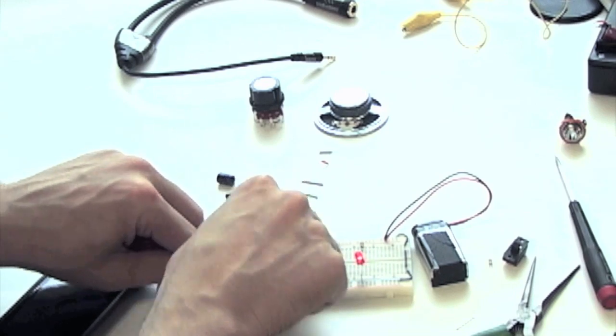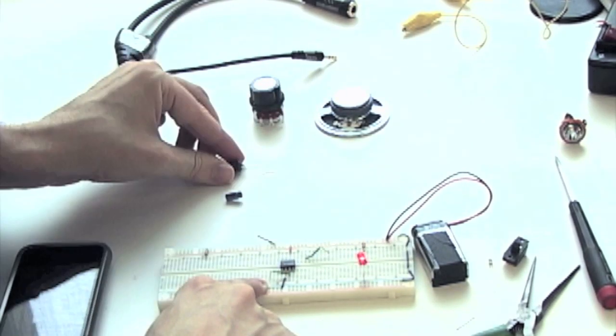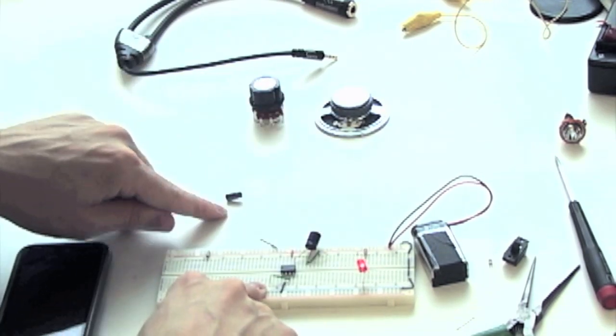We can then insert the LM386 and the components that attach to it. Pause the video and place the necessary components, as they're shown here.